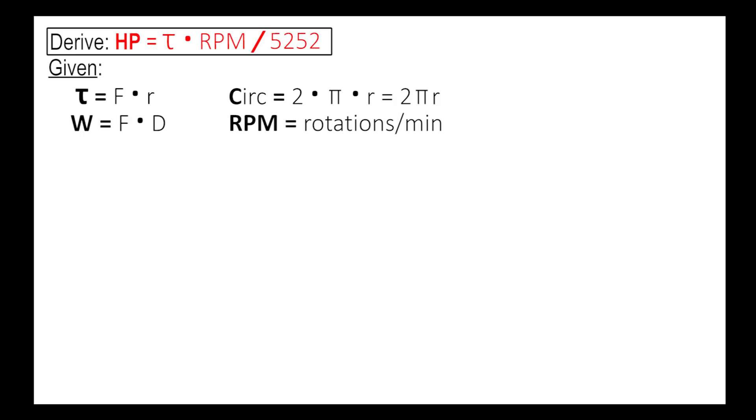Then RPM, which is rotations per minute, and then velocity, which is equal to distance over time. And if you work it out, velocity also equals 2 pi r, which is the circumference, times RPM. So that will give you the linear velocity of a rotating wheel.